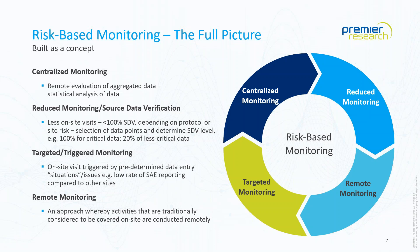The third pillar is targeted or triggered monitoring, which ties directly into centralized monitoring. The central monitor reviews data and may see a trend or signal — all predefined before work begins. That trigger then initiates a predefined activity. A classic example: in a study with 10 sites and a complex indication with high comorbidity where you'd expect three to four SAEs per patient, nine sites report around two SAEs on average, but one site reports zero or very few. That would typically trigger an onsite visit to investigate.